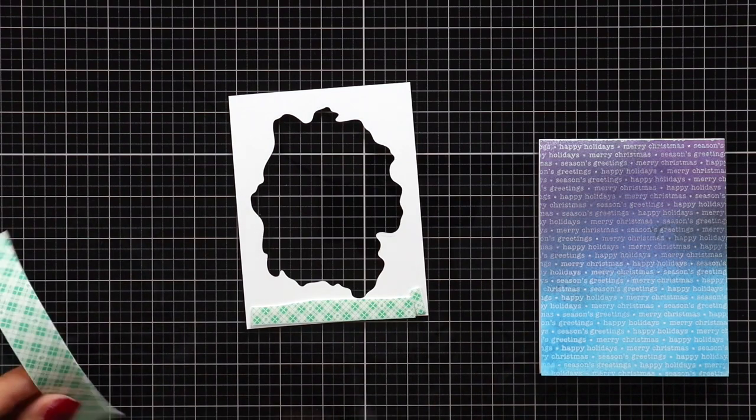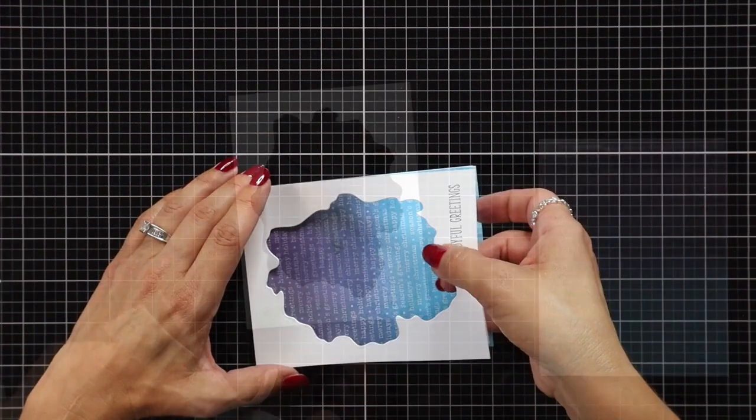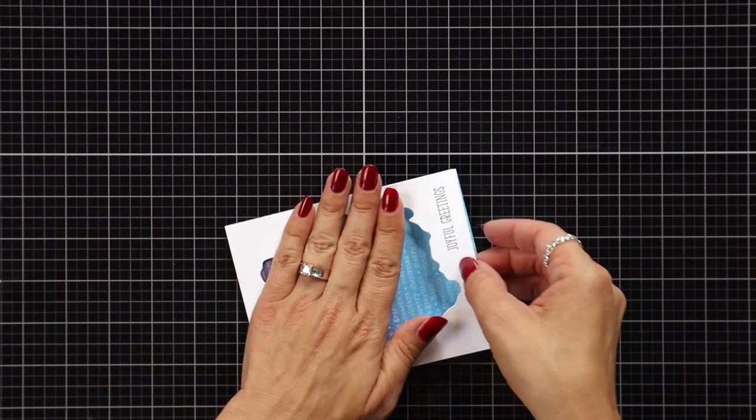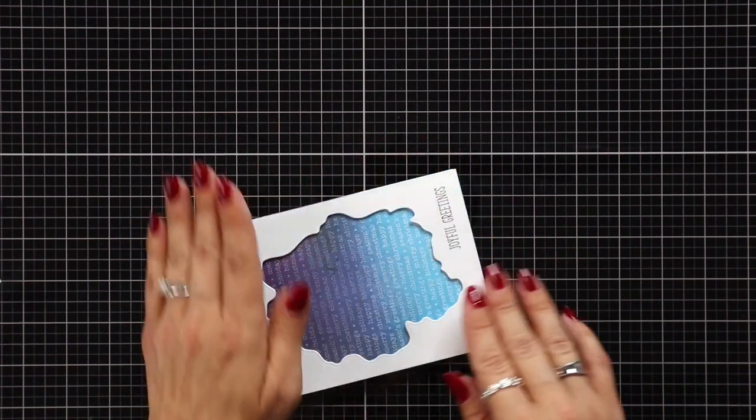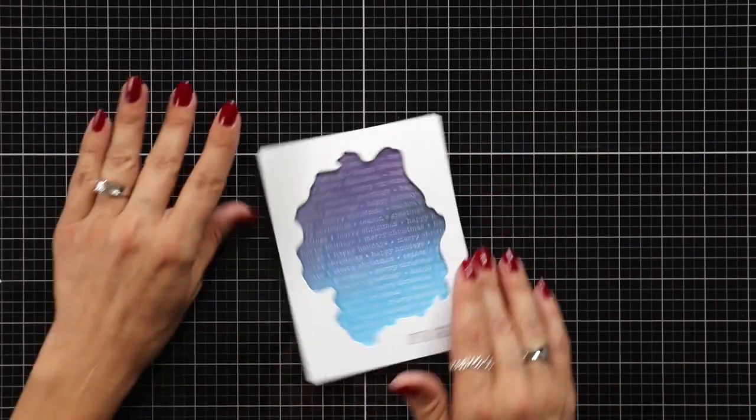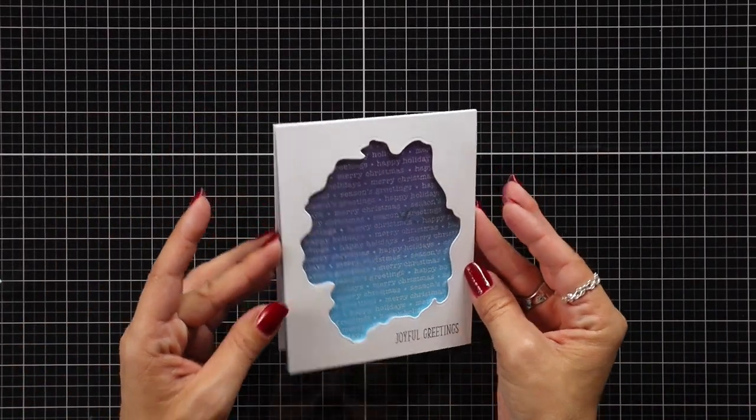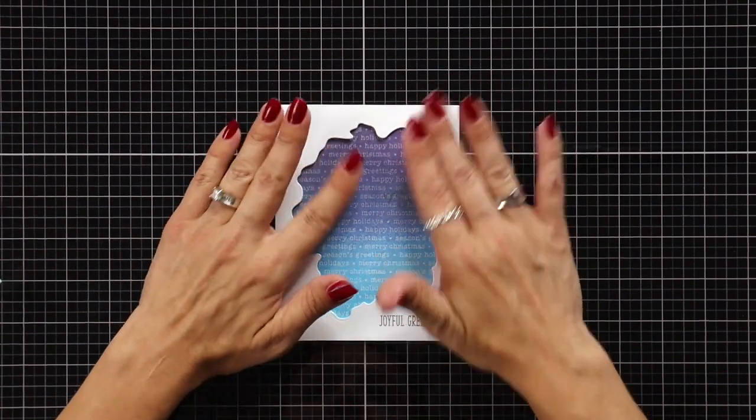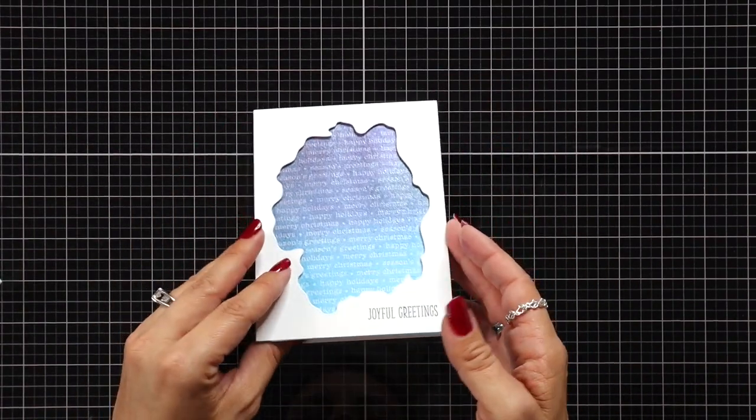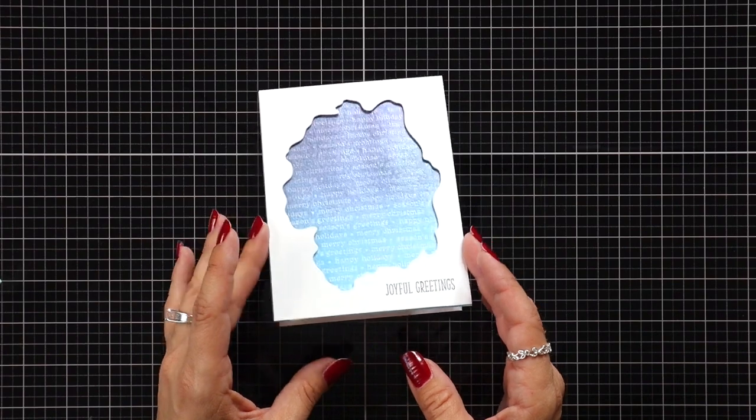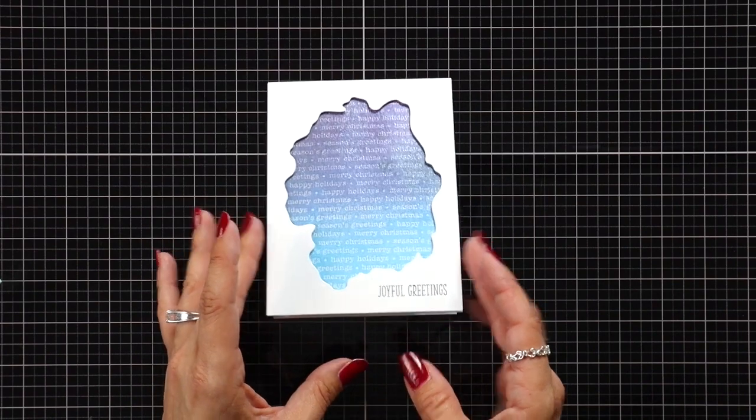Off screen I did create a card base for this that is going to be a top-folding card, so then I could remove the backing of my foam tape and add this all to the front of the card. I did attach the background with a tape runner and then the foam tape for that front panel. This would also make a really good shaker card.